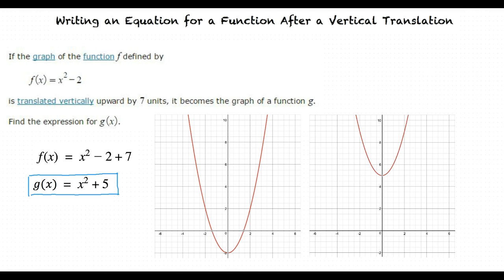A function that looks exactly the same as our original function, f(x) = x² - 2, except that it's moved upwards 7 units. So even though the number being added in g(x) is positive 5, we can see that the function is still 7 units above our original function.